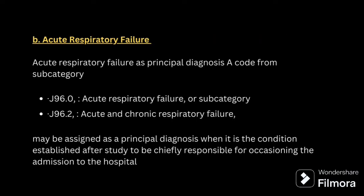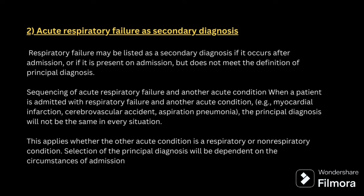For acute respiratory failure, the code is J96.0, and chronic respiratory failure is J96.2. This will be given as a primary diagnosis if it is the reason for the encounter. When acute respiratory failure is coded as a secondary diagnosis, the patient is coming to the hospital with another condition — for example, myocardial infarction, cerebrovascular accident, or aspiration pneumonia — and respiratory failure will be the secondary diagnosis.